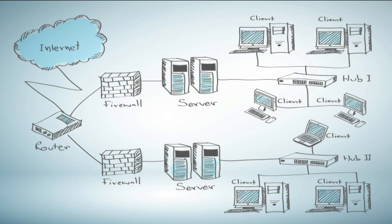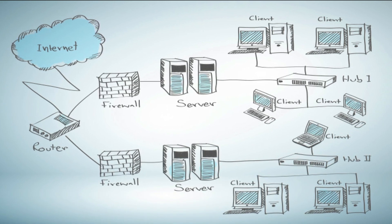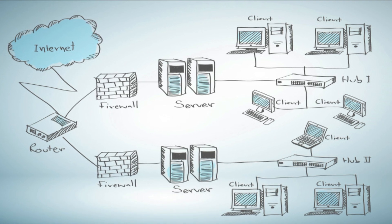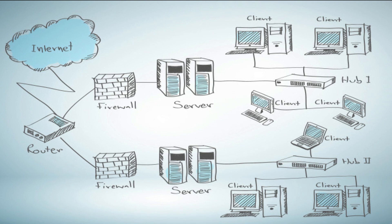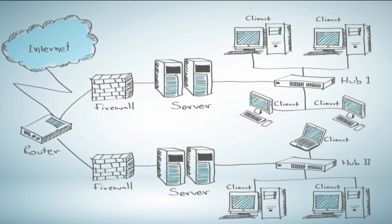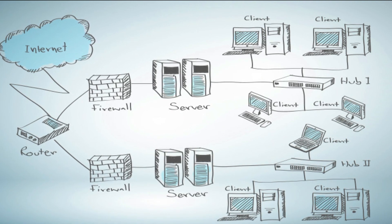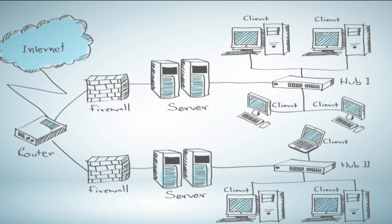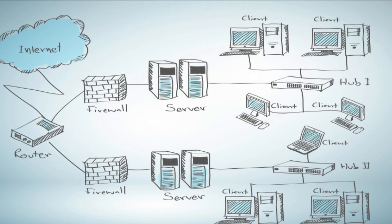Network mapping creates a graphical representation of network nodes and the links between them. Network nodes may include routers, switches, firewalls, and other devices. Network mapping can be used to produce an overview of a network or just a portion, typically showing the current status and other key pieces of information for all devices connected to the network.